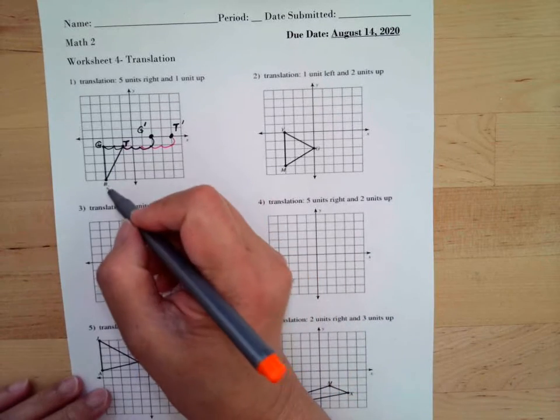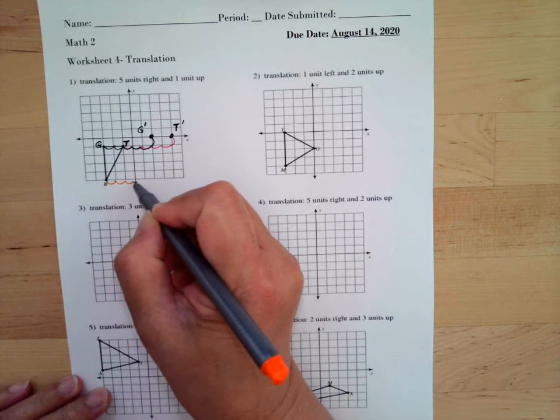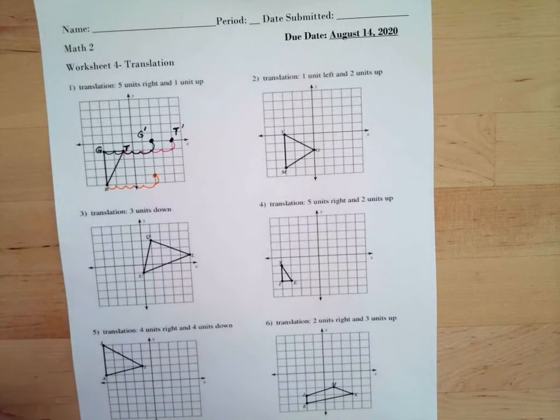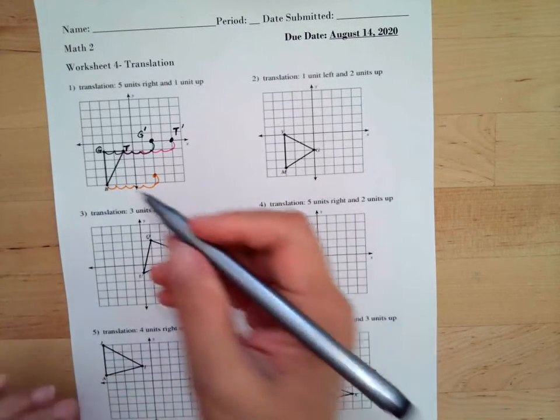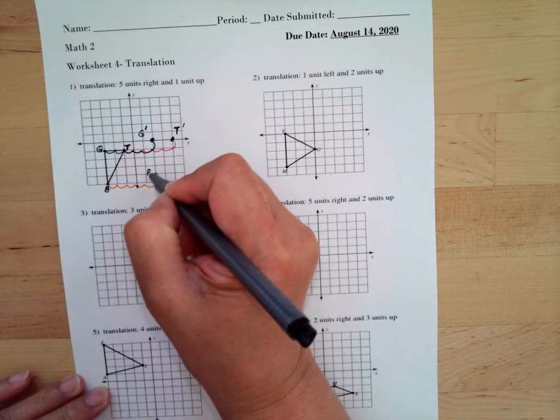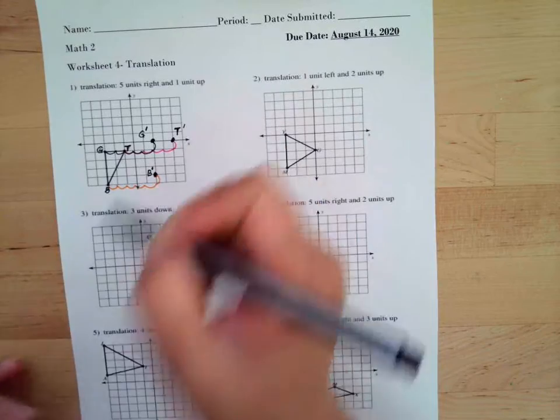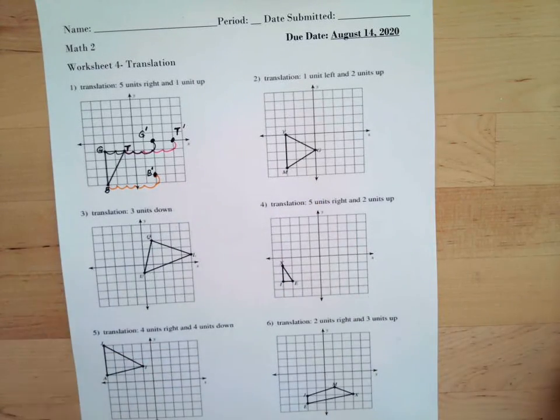So this will be one, two, three, four, five, and one up. So this is the new location of our letter B. So this is B, so this is our B prime. Then connect the dots of our new location.